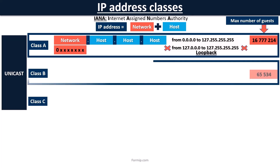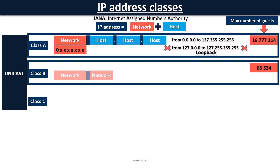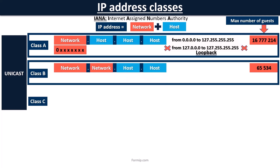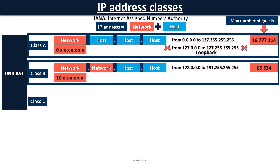Class B is designed to meet the needs of networks with more than 65,000 hosts. It uses two of the four bytes to indicate the network address, and the remaining two bytes are reserved for hosts. The first two bits of the first byte always start with 10 in binary, which gives us an IP range of 128 to 191.